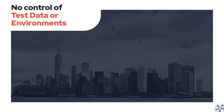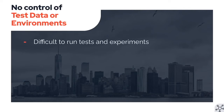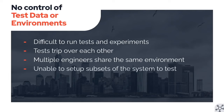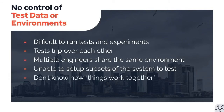The next mistake is having no control of test data or environments. It becomes difficult to run tests and experiments, and automated tests trip over each other since they share the same data and environment. Multiple engineers might be developing on the same environment, causing features to clash. Another problem is that you can't set up subsets of a system to test just one piece — you have to spin up everything instead. I commonly see people claim they have micro-services, but still have to spin every service up just to test anything. And lastly, no one really knows how things work together because there aren't any tests to document this, so the overall architecture is a black box.